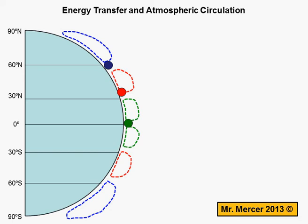On your screen, what you can see is a hemisphere of Earth, with zero degrees representing the equator and 90 degrees north representing the North Pole. I've sketched in the cellular system, giving you both the southern and the northern hemisphere, but we'll only concern ourselves with the northern hemisphere. You don't need to worry about what's happening in the south, because it's all a mirror image anyway.